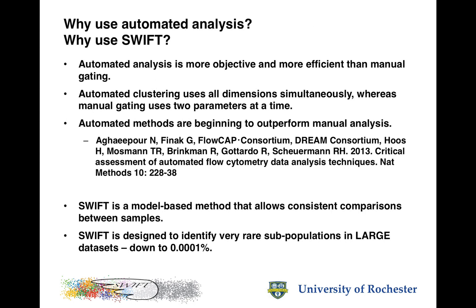So, first of all, why would we want to use automated analysis and in particular why use the Swift algorithm? It is becoming more and more clear that automated analysis is both more objective and more efficient than manual gating. Automatic clustering allows us to use all dimensions simultaneously, which contrasts with manual gating procedures where only two parameters are used at a time.